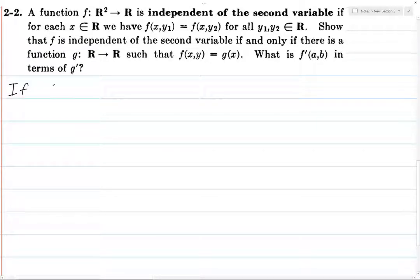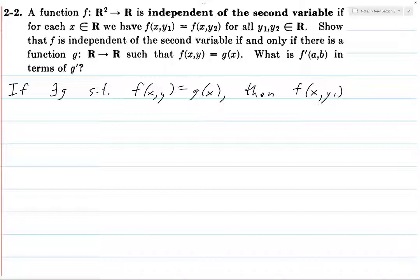So let's first prove this if and only if. If there exists a g such that f of xy equals g of x, then for every x, y1 and y2, then f of x comma y1, since f of xy equals g of x, this is going to be equal to g of x. But that's going to be the same thing as f of x comma y2. So that direction, going backwards is straightforward.